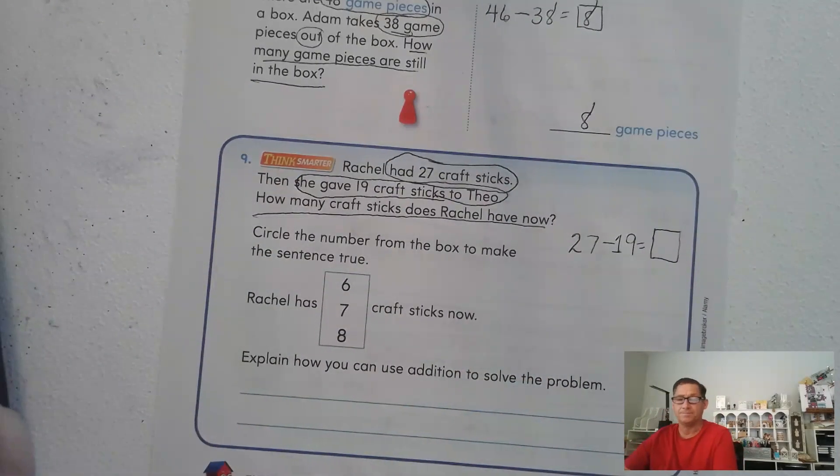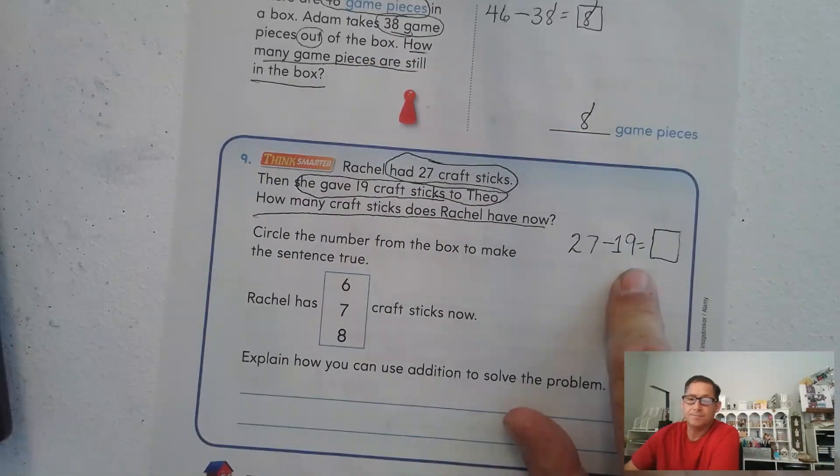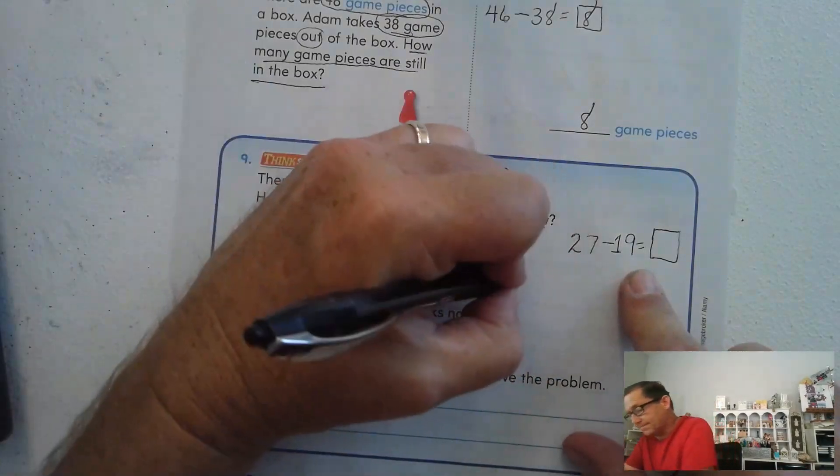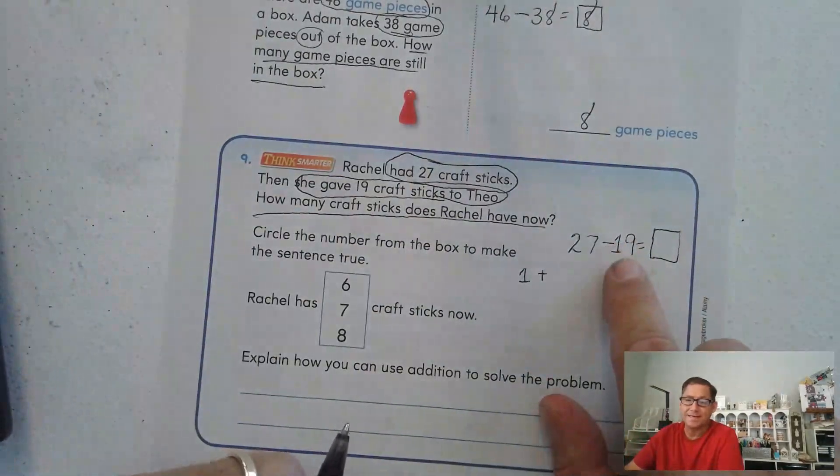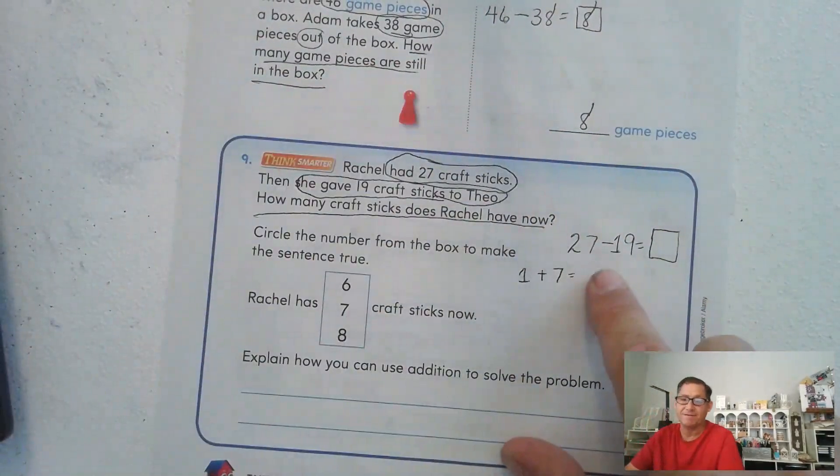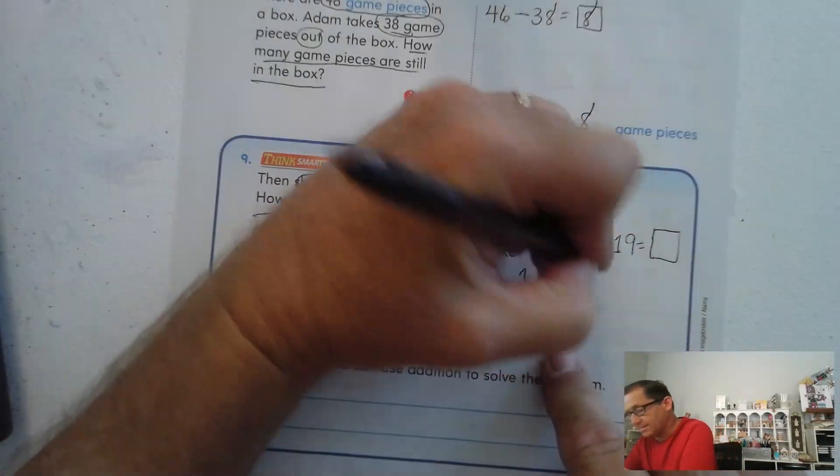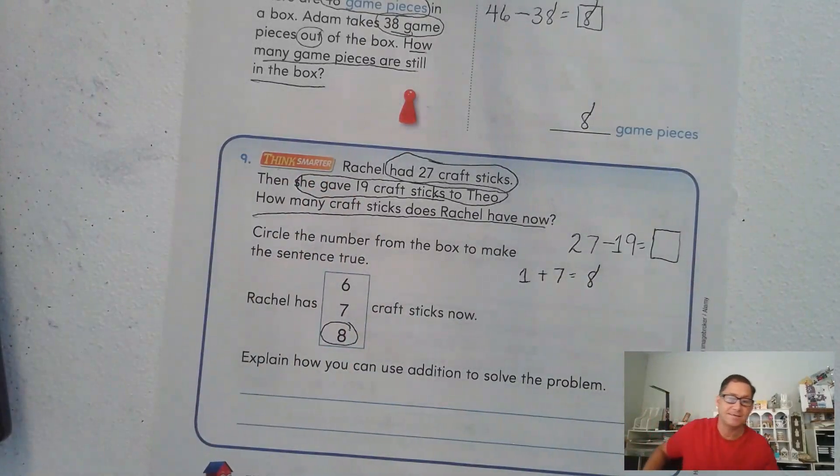Circle the number from the box to make the sentence true. Rachel has blank craft sticks now. Well, let's count up. 19 plus what is 20? 1. Now let's go from 20 to 27. That would be a jump of 7. 20 to 27 is 7. So 7 plus 1 is 8. So she has 8 craft sticks now.